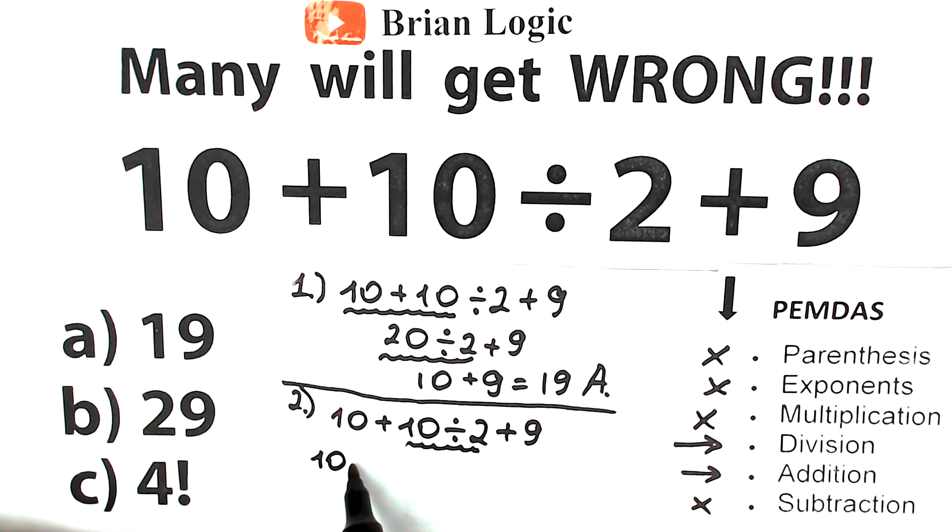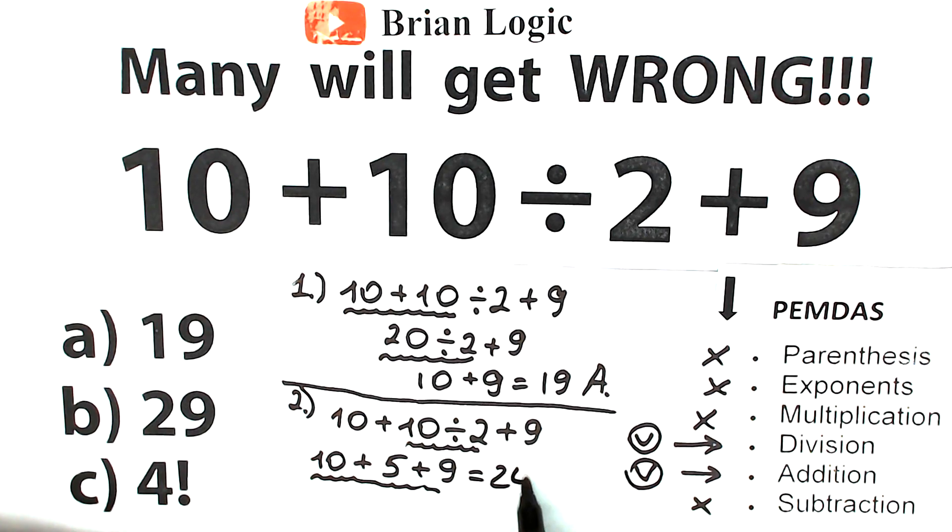So we have 10 + 10 ÷ 2 + 9. We do division first: 10 ÷ 2 = 5. So we have 10 + 5 + 9. We complete the division part, and then we complete our addition: 10 + 5 + 9 = 24.